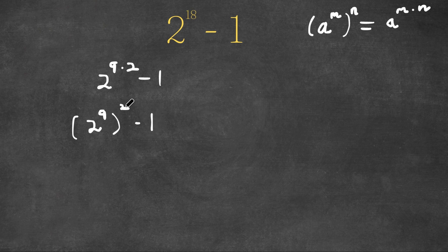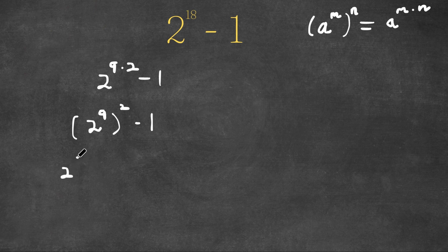And 2 to the power of 9 to the power of 2, well, this can be written as 2 to the power of 9 times 2 to the power of 9 because it's just 2 to the power of 9 two times, minus 1.